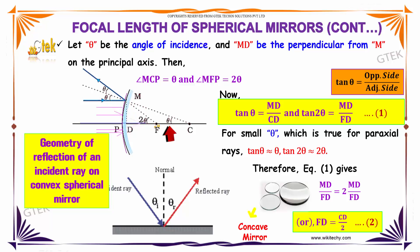For small theta, which is true for paraxial rays, tan theta is approximately equal to theta and tan 2 theta is approximately 2 theta.